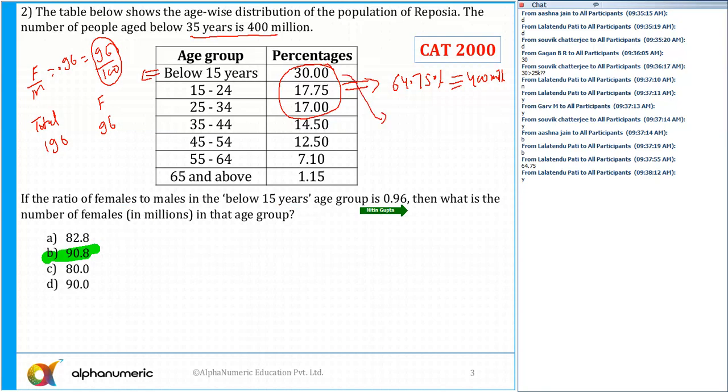...is 30%. Since 64.75% equals 400 million, 1% is 400 divided by 64.75. So 30% equals 400 upon 64.75 times 30, which comes out to approximately 185 million.